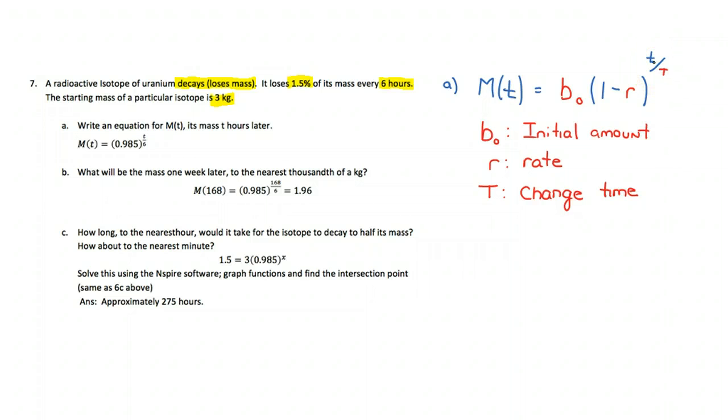The key to these problems is picking out these letters in red. B0 being the initial amount, R being the rate, and capital T being the change time.